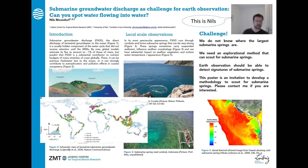We've done a global modeling study which estimates that at the global scale, fresh groundwater discharge is only about 1% of river discharge, which is not that much. But it's usually enriched in nutrients, and in many areas of the coastline it's more than the river discharge or at least a substantial part of the total coastal water budget. The areas colored in green, purple, red, or orange are where the global model expects groundwater to contribute a substantial part of the risk of eutrophication at the coast.